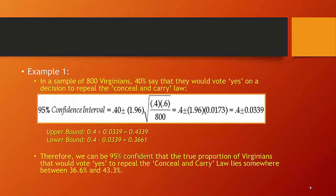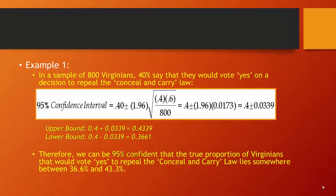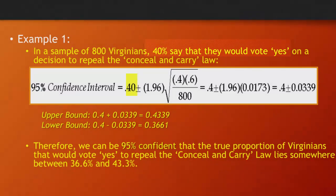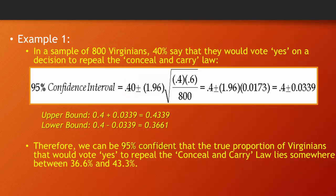In a sample of 800 Virginians, 40% say that they would vote yes on a decision to repeal the conceal and carry law. Let's build a 95% confidence interval around this. So 0.4 is our proportion. Then we're going to have plus or minus 1.96, which was our z-score for 95% confidence, multiplied by the standard error of our proportion. Remember, the standard error is the square root of pq over n. So we have 0.4 times 0.6 divided by 800, and we're going to take the square root of all of that. That leaves us with 0.4 plus or minus 0.0339.